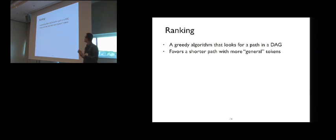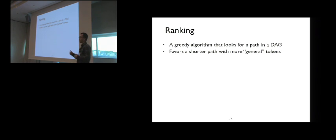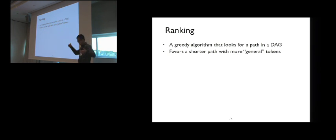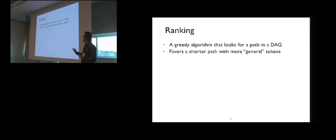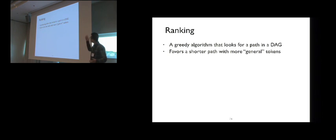The ranking algorithm is a greedy algorithm that looks for a path in the DAG — recall that a path represents a token sequence. It favors shorter paths with more general tokens, because simpler, shorter expressions using more general tokens tend to be the correct program the user wants. This is a heuristic.